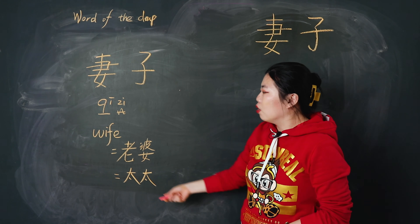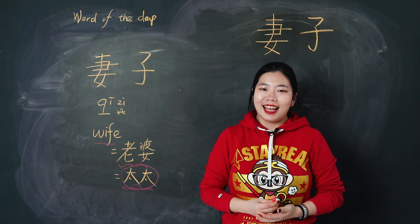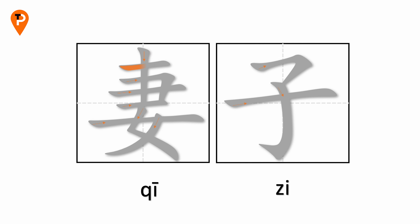妻子 means wife. You'll always hear 老婆 or 太太 — these two words also mean wife, but 妻子 is a more formal one; it's written Chinese. 老婆 and 太太 are more oral speaking ones. But pay attention: if you want to say Mrs. Smith, you only need to say Smith's 太太 — you cannot use 老婆 or 妻子. So if you want to say the husband's family name before, you only use 太太.